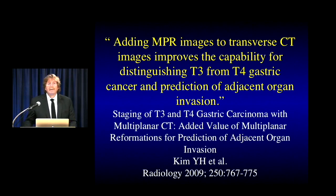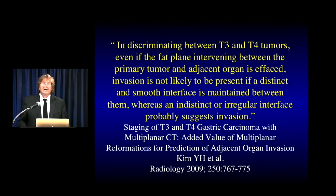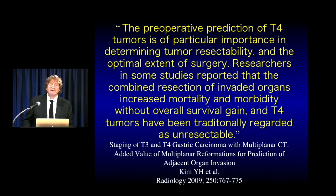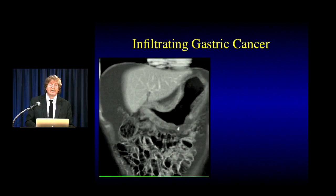An article by Kim showed that adding MPR to transverse CT improves the capability for distinguishing T3 from T4 lesions and predicting invasion. The combination of CT and multiplanar imaging is more accurate than axial alone in predicting spread, particularly looking at adjacent organ fat planes where coronals are especially valuable. The preoperative prediction of T4 tumors is important in determining extent of surgery — researchers in some studies reported that combined resection of invaded organs increased mortality and morbidity without overall survival gain. So at T4, declaring unresectable is the way to go.